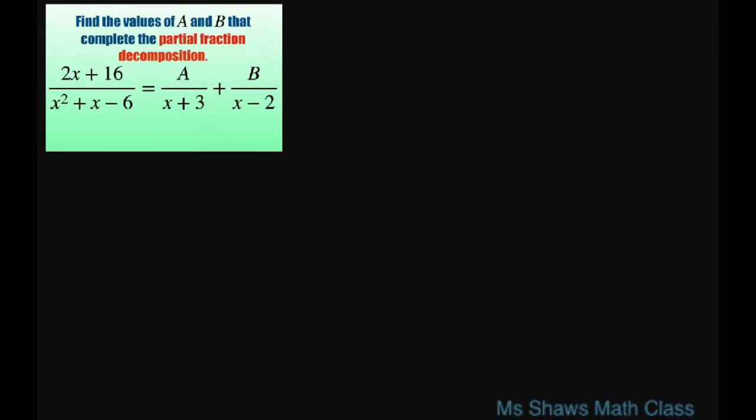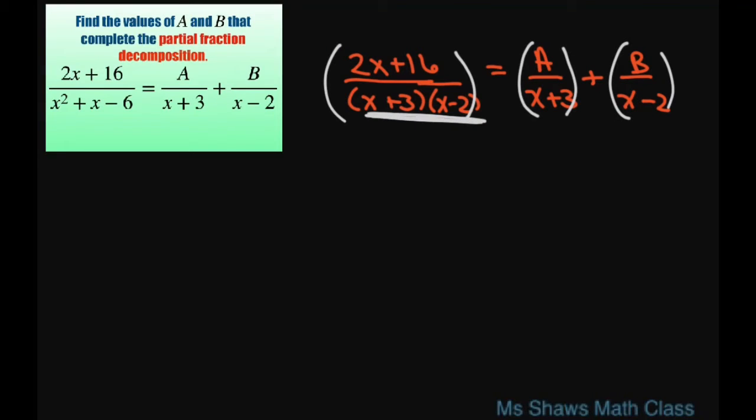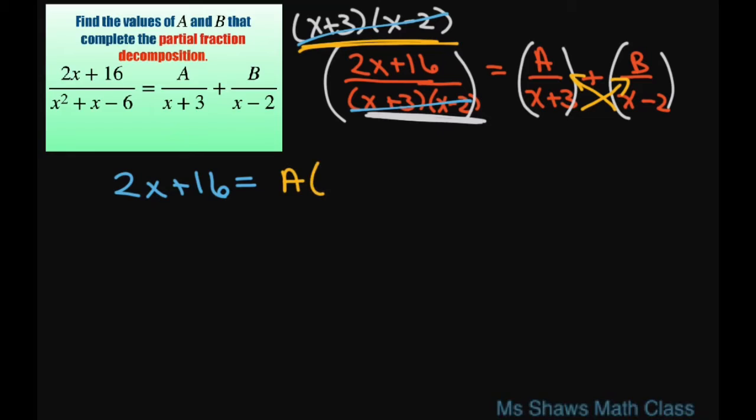So the first step you do is you clear the fractions. And by that I mean you have 2x plus 16 divided by x plus 3 times x minus 2 equals A divided by x plus 3 plus B divided by x minus 2. And to clear the fractions you're just multiplying each term by this. So what's going to happen when you multiply each term by this, x plus 3 times x minus 2, this goes away. You have 2x plus 16 equals, and when you multiply both of these by the same thing, you're just doing this little butterfly method here. You're going to get A times x minus 2 plus B times x plus 3.